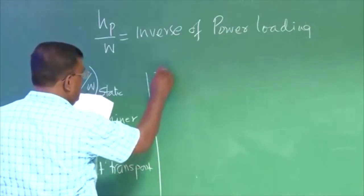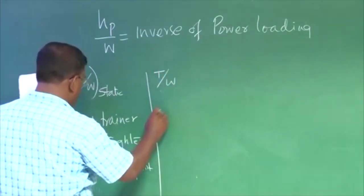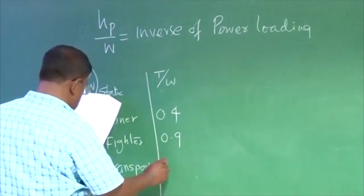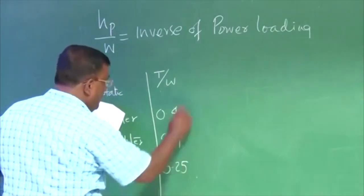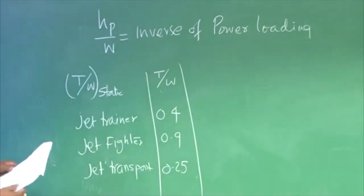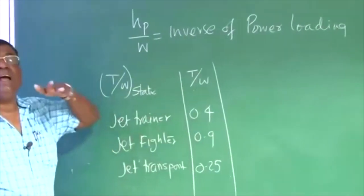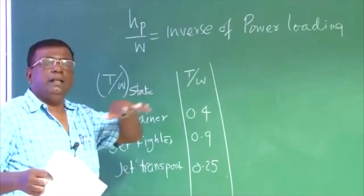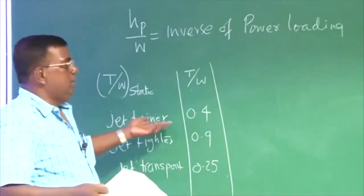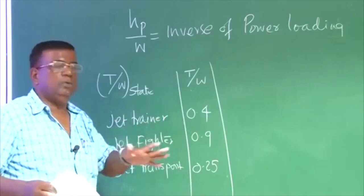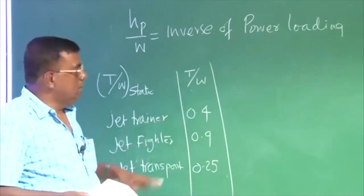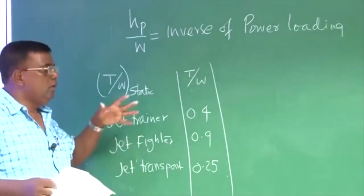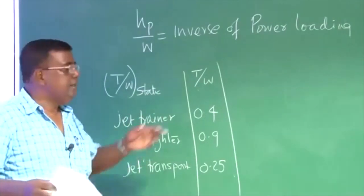So HP by W is inverse of power loading. And typical values, if I give you T by W. When I write T by W, I have now mandated that I should write static at sea level. And also I write for different airplane. Jet trainer, which I have given you earlier. Jet trainer, jet fighter, and let's say jet transport. This value would be T by W would be typically 0.4. Here it is, jet fighter has to be more, 0.9, and jet transport 0.25, which is obvious. Why does jet fighter have T by W higher? Because it has to accelerate fast. Jet transport is cool. It has nothing in a hurry to accelerate. And jet trainer of course has to be little more because you have to do so many maneuvers.